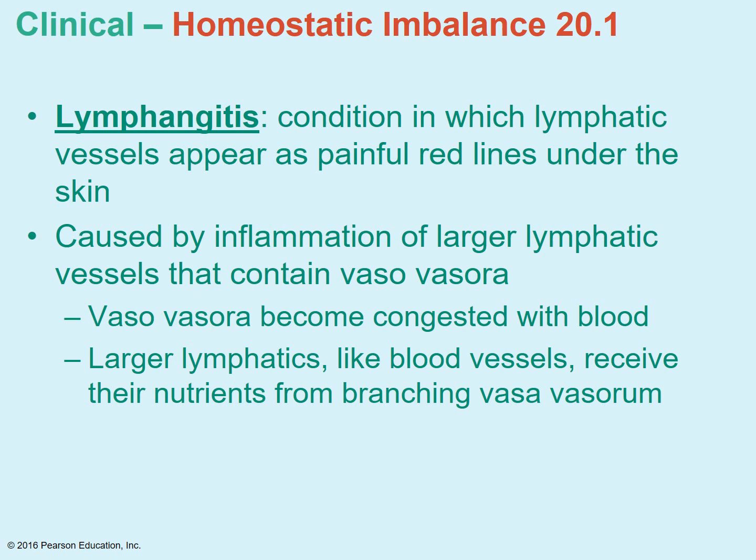You can also see on that picture the location of many of the lymph nodes. Sometimes there's a condition called lymphangitis, where the lymphatic vessels look like red lines under the skin — it's inflammation. Anything that ends with -itis means inflammation, so this would be inflammation of the lymphatic vessels.